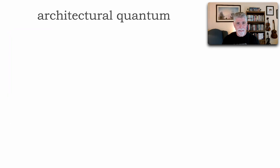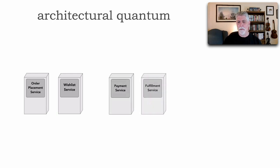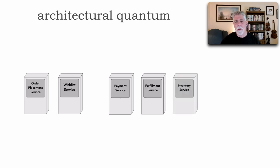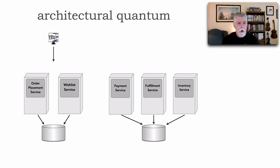Let me show you an example. Say we have a bunch of services: order placement, a wishlist, a payment service, fulfillment for pick-pack-and-ship processing, and an inventory service. Order placement and wishlist share one database, while payment, fulfillment, and inventory interact with a different database. The users or customers only interact with order placement and wishlist — they don't interact with any of the other services.